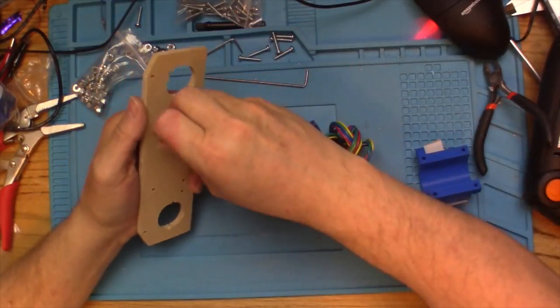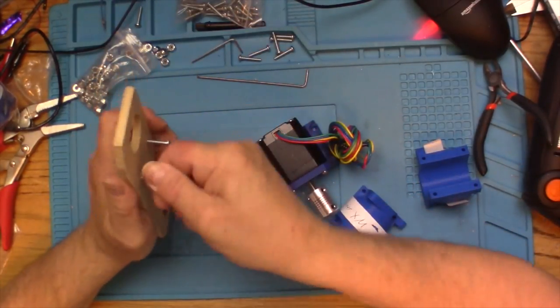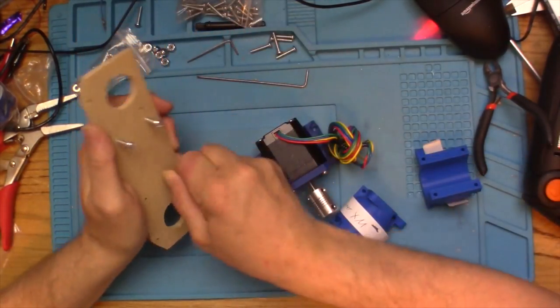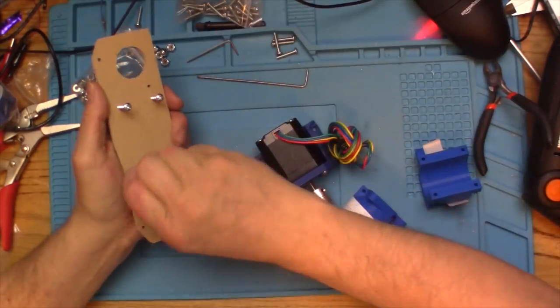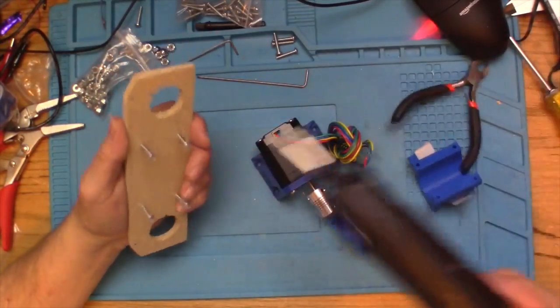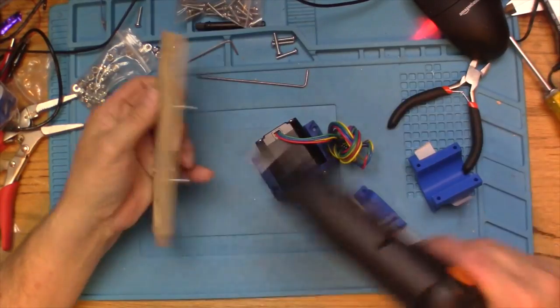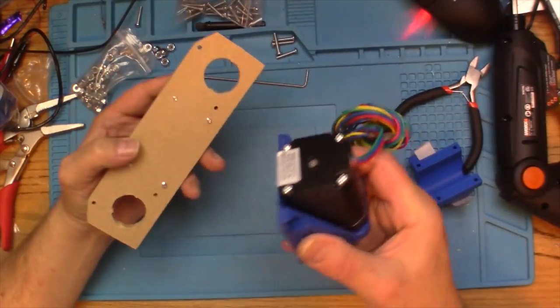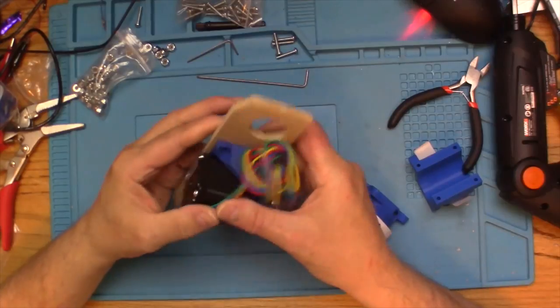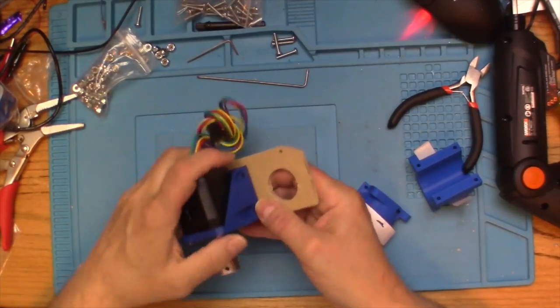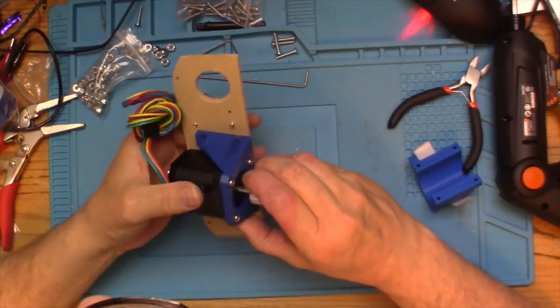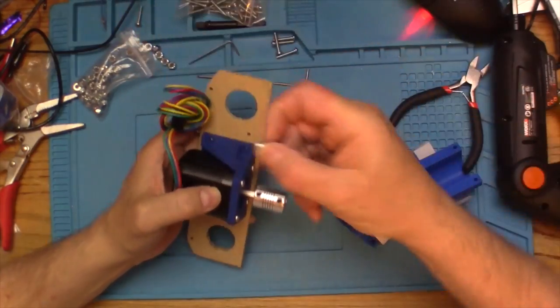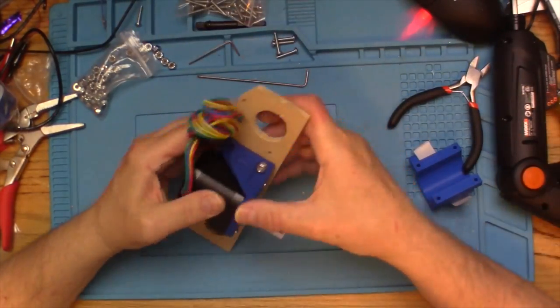The first thing we're going to do is go ahead and prepare to install the center section here. Some of those are a little snug, that's fine. Then we're going to align this piece on there properly through those screw holes.